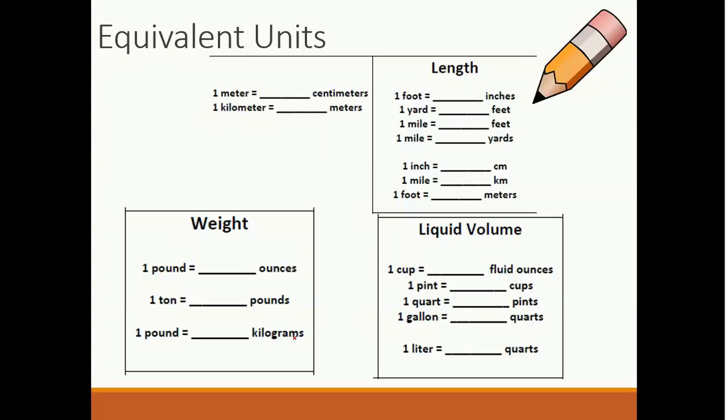Here's where that pink sheet comes in. Fill in the units as I fill them in. 1 meter is 100 centimeters, and 1 kilometer is equal to 1000 meters. Now the U.S. system: 1 foot is 12 inches. 1 yard has 3 feet, and 1 mile has 5,280 feet. 1 mile has 1,760 yards. 1 inch equals 2.54 centimeters, 1 mile is 1.61 kilometers, and 1 foot is 0.30 meters.